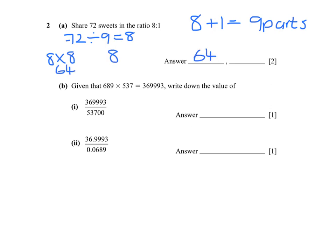And the second person gets 8 times 1, 8 sweets. In part 1, 689 times 537 is 369,993.